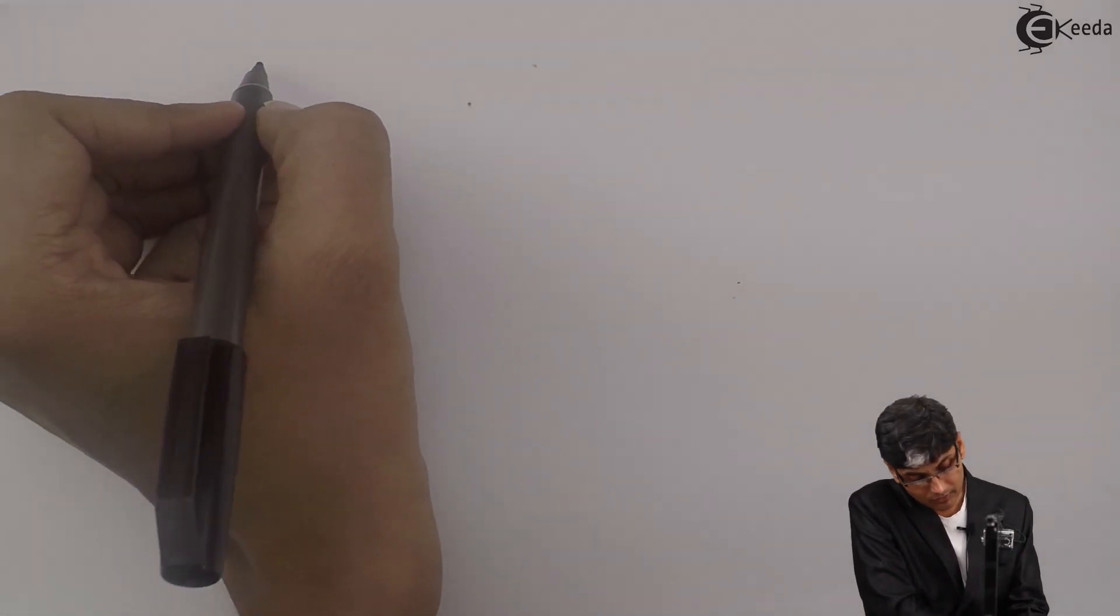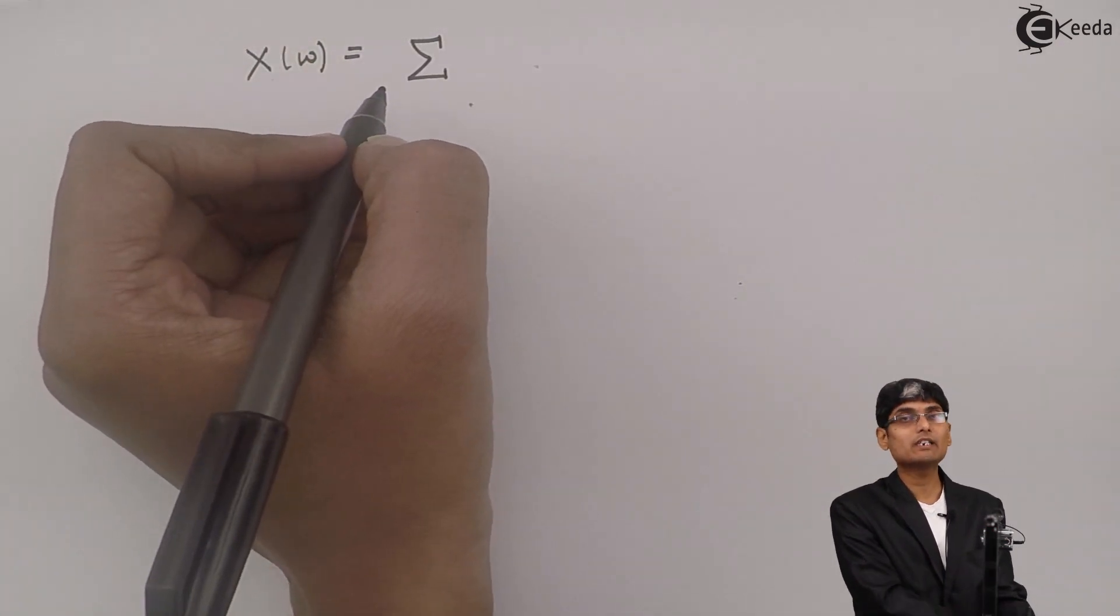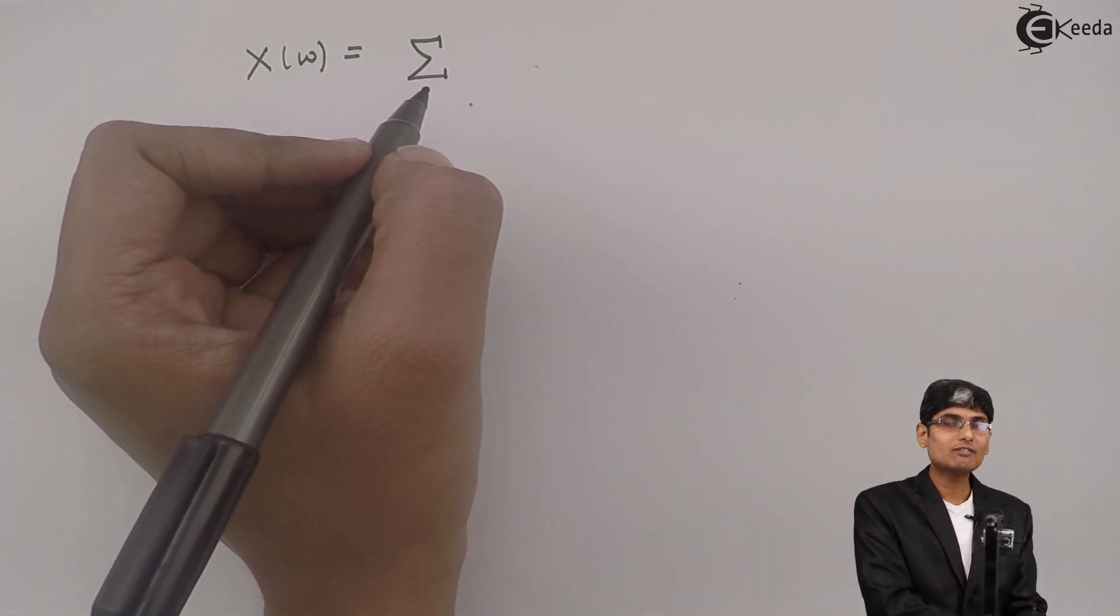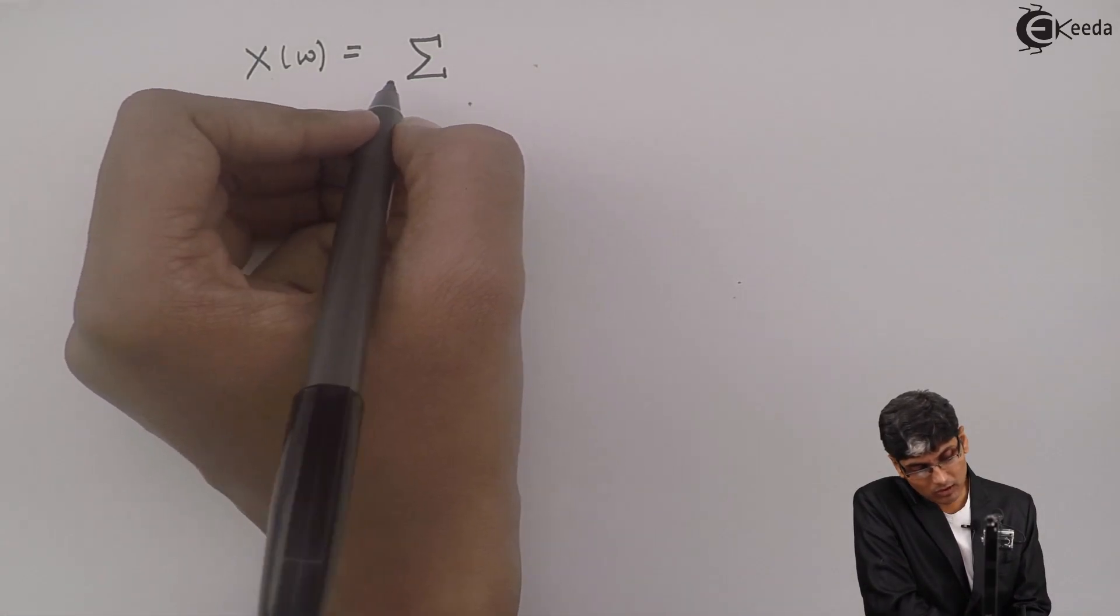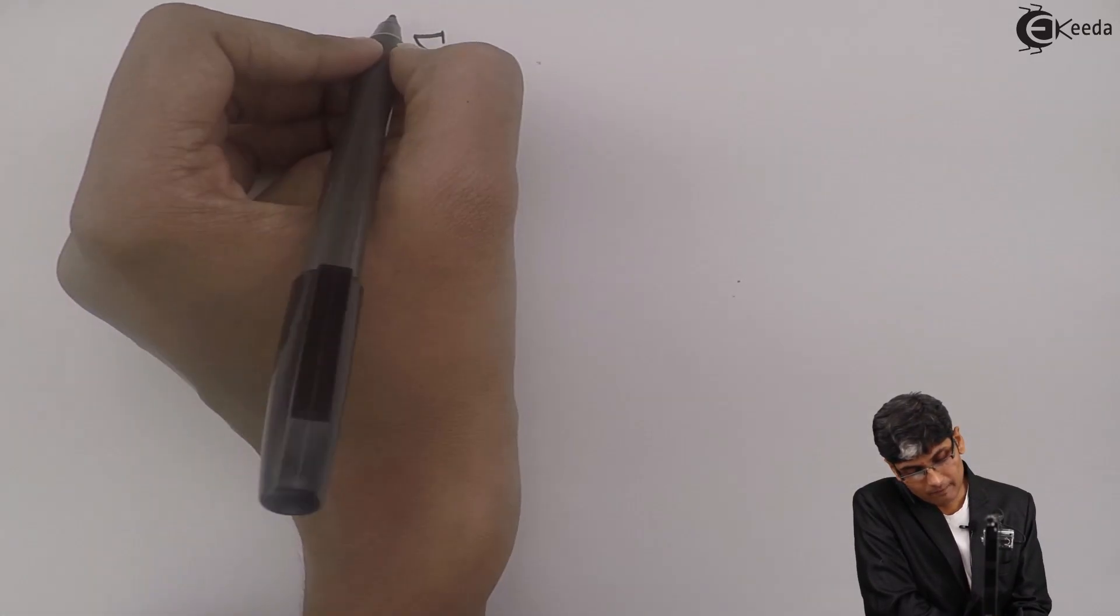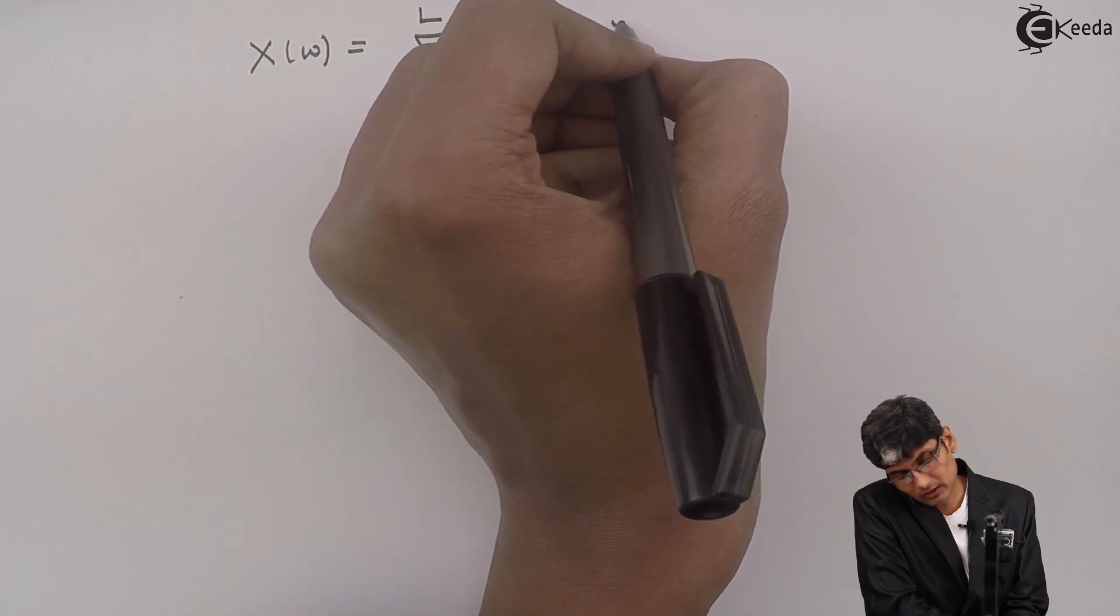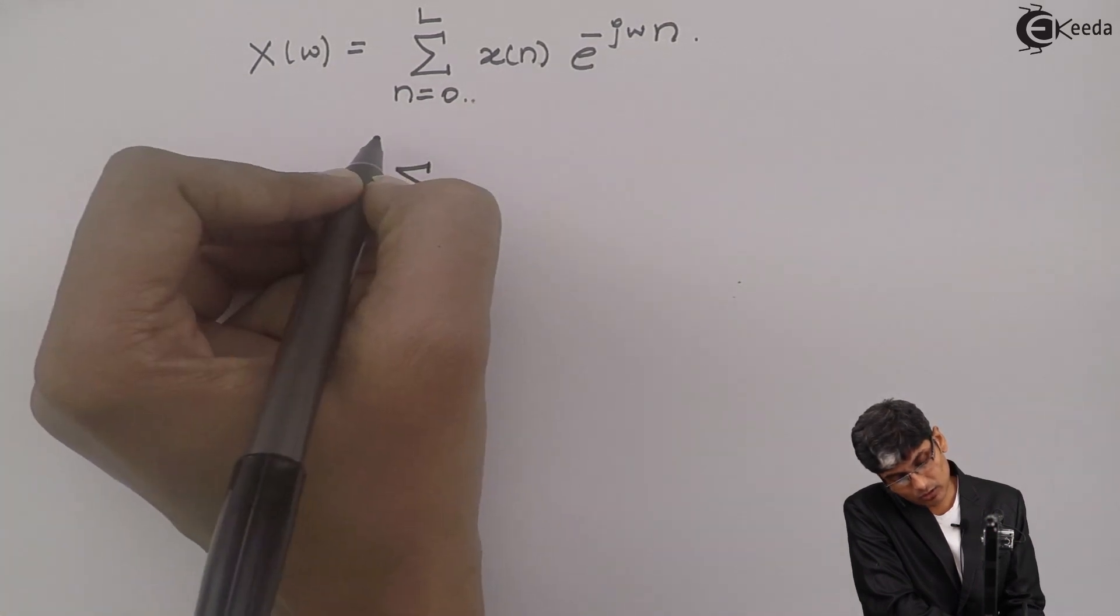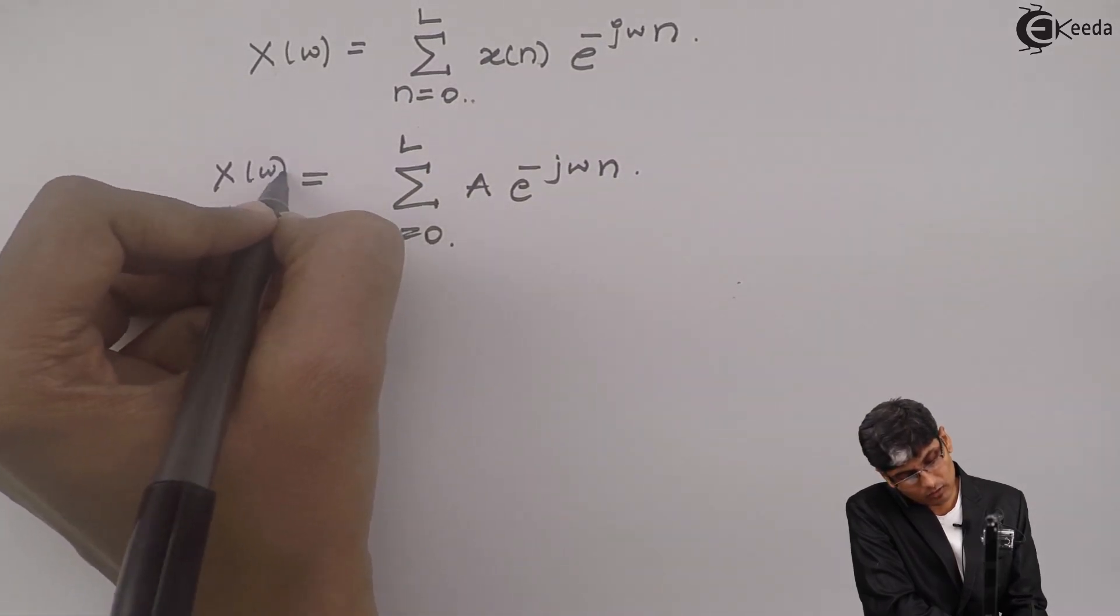After putting the value of x(n), my X(ω) will look like X(ω) = summation from n = 0. Now n is not going to infinity because after L the signals are going to 0, so after L the summation will all return to 0. That is why I will put the limits on the summation as 0 to L: X(ω) = Σ(n=0 to L) Ae^(-jωn).